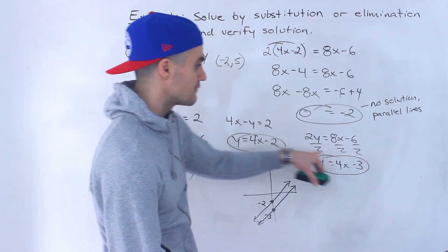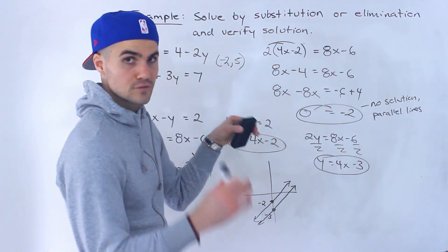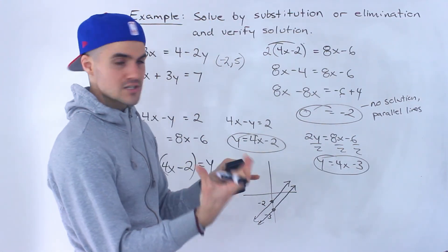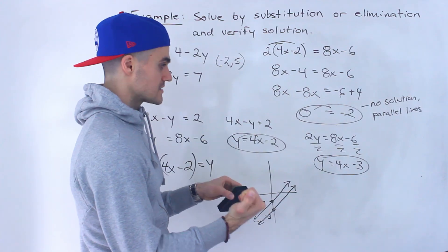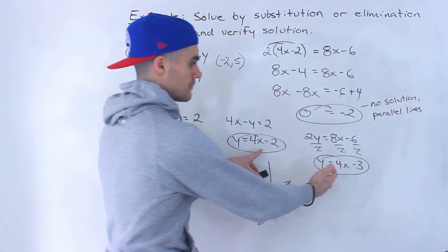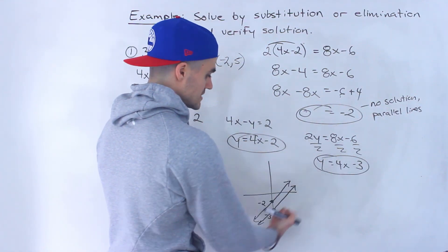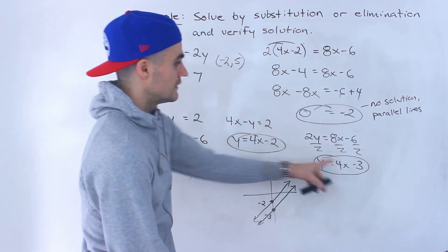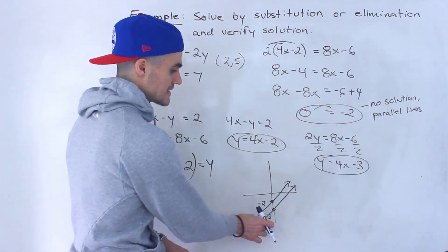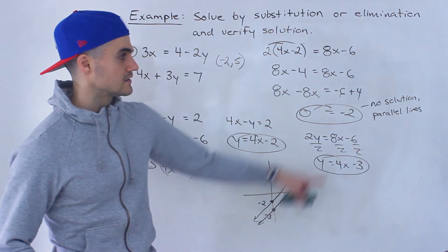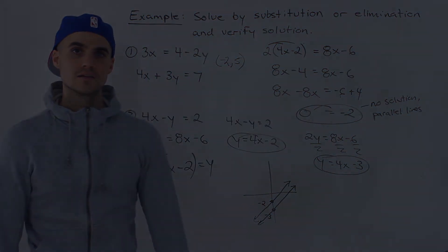So you could verify it by putting them both into y equals mx plus b form. They have the same slope, but they have a different b value. If you got an infinite solution answer where 0 equals 0, then both of these would be the same. But these two lines, they have the same slope. They're parallel, but they got different b values. And so notice that they're never going to intersect, hence why there's not a solution.